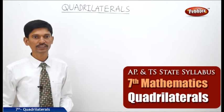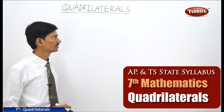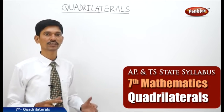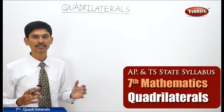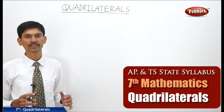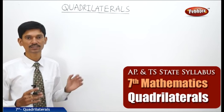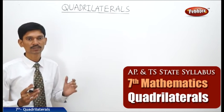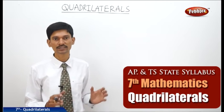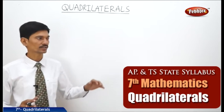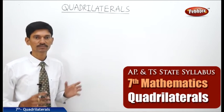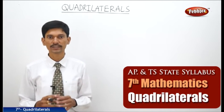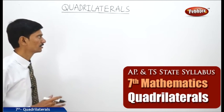Now let us start the next chapter, that is quadrilaterals. A simple closed figure bounded by four line segments is called a quadrilateral. A triangle means a simple closed figure bounded by three line segments, whereas a quadrilateral means a simple closed figure bounded by four line segments.